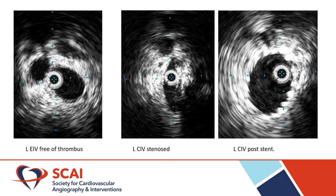Here are some representative intravascular ultrasound images from the second procedure. On the left, you can appreciate that the left external iliac vein is now free of thrombus. The left common iliac vein in the center image is compressed and stenosed, and post-stenting there is a significant luminal area gain.